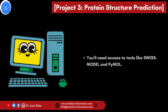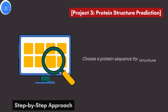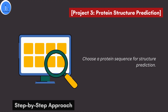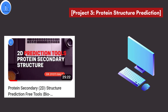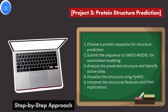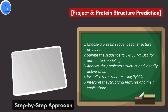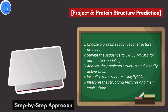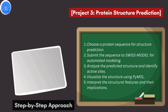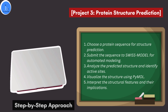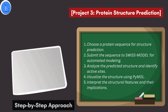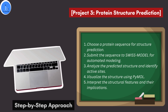Here is a step-by-step approach. Choose a protein sequence for structure prediction. You can get this information from NCBI Protein or UniProt. I have already made detailed tutorials for such tools and resources — I will put the links in the description section. Once you have selected your protein sequence, submit it to Swiss Model for automated homology modeling. Analyze the predicted structure and identify the active site. Visualize these structures using tools such as PyMol, Chimera, or Discovery Studio. Then interpret the structural features and their implications.